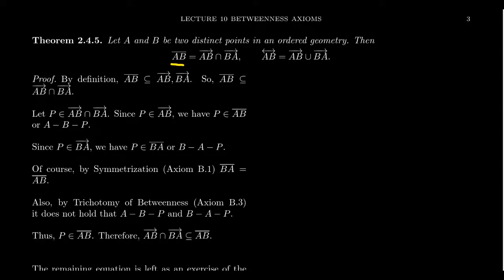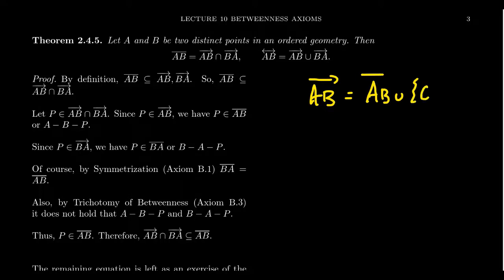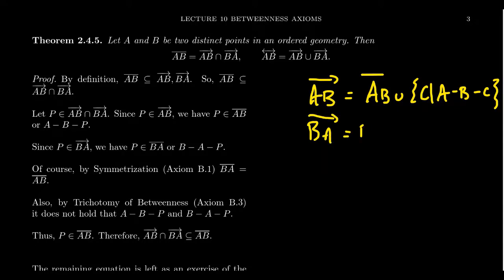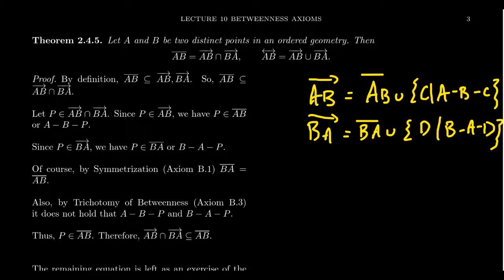The first direction is easy. We want to show AB segment is a subset of the intersection of rays AB and BA. By definition, ray AB is the line segment AB union with extension points C such that B is between A and C. So ray AB contains segment AB by definition. For ray BA, it equals segment BA union with points D such that B-A-D. By axiom B1, symmetrization, segments BA and AB are the same. So both rays contain segment AB, meaning AB is a subset of the intersection of rays AB and BA.